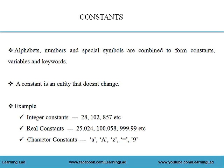A character constant is a single alphabet, digit or symbol written in single quotes. For example, written in single quotes: capital A, Z, equal to, or 9 — these are the character constants.